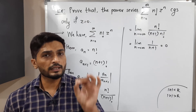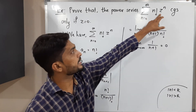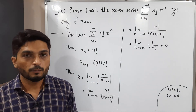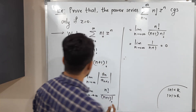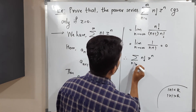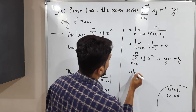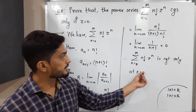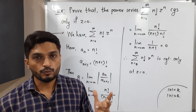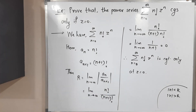Since the radius of convergence is 0, the given power series is convergent only at the center of convergence. Here the series is centered at Z equals 0, so it is convergent only at Z equals 0 and divergent for all other values. Therefore, the series summation of n-factorial times Z raised to n, n running from 0 to infinity, is convergent only at Z equals 0. We can verify this: if we put Z equals 0, all terms become 0, giving a finite value, confirming convergence.